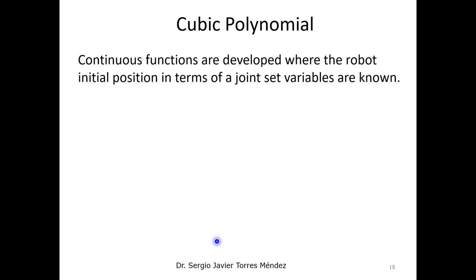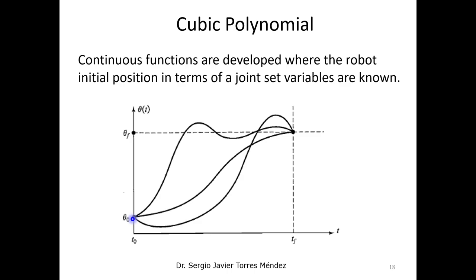Let's start with the cubic polynomial function to solve these trajectories. You can use any function, but the most common and basic one is the cubic polynomial, because you can find the derivative for position. The position is a cubic polynomial, its derivative gives a quadratic function for velocity, and the second derivative gives a linear function for acceleration. That's why it is the basic function used in these interpolation methods.